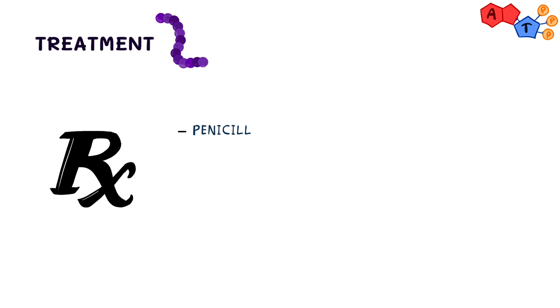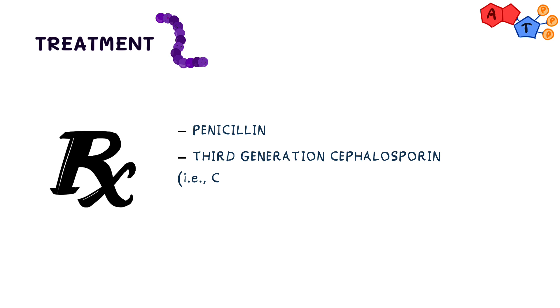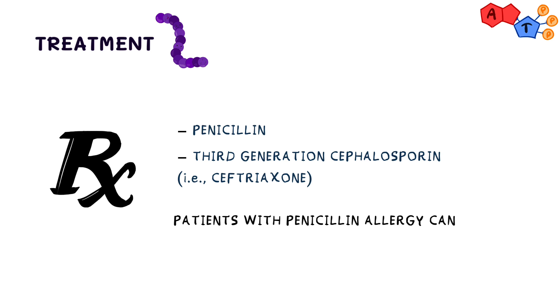Now let's talk about the treatment of Streptococcus viridans. Penicillin or third-generation cephalosporin, like ceftriaxone, can be used to treat Streptococcus viridans infection. Patients with penicillin allergy can be treated with a macrolide instead.